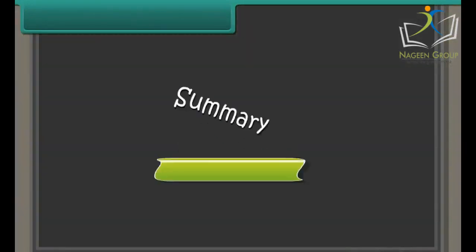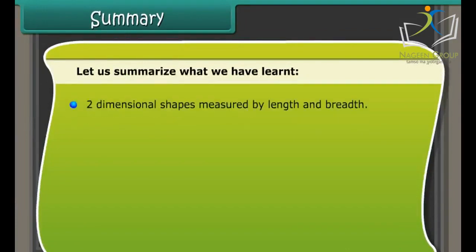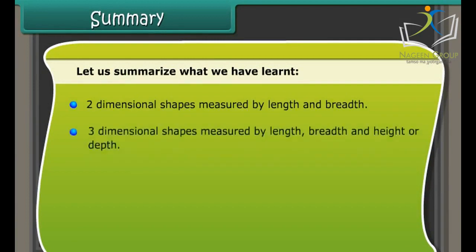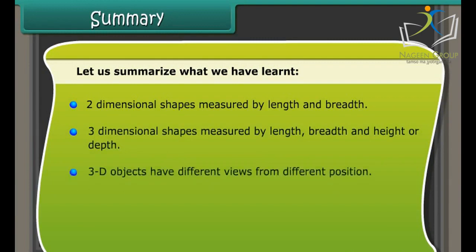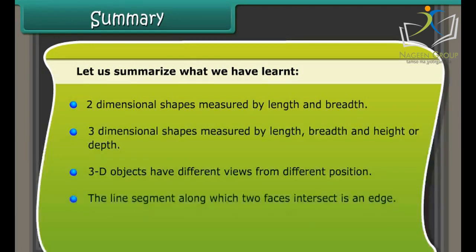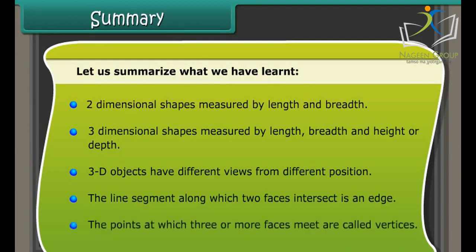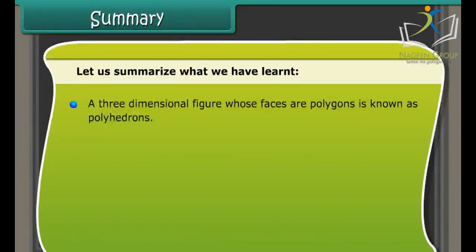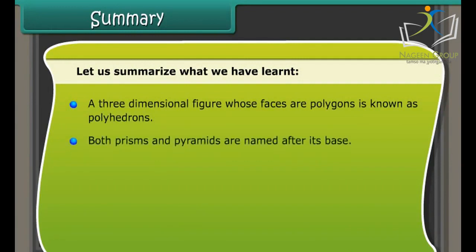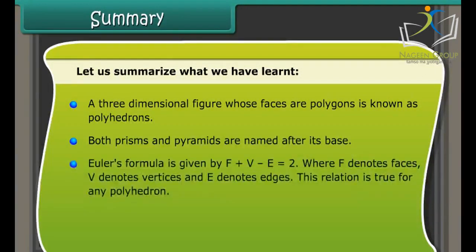In summary: two-dimensional shapes are measured by length and breadth. Three-dimensional shapes are measured by length, breadth, and height or depth. 3D objects have different views from different positions. An edge is the line segment along which two faces intersect; vertices are the points where three or more faces meet. A three-dimensional figure whose faces are polygons is a polyhedron. Both prisms and pyramids are named after their bases. Euler's formula is given by F + V − E = 2, where F denotes faces, V denotes vertices, and E denotes edges. This relation holds true for any polyhedron.